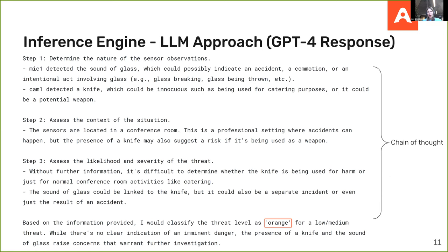This is an example of the chain of thought that GPT goes through, considering the different possible causes that could have led to those observations. In the end, it classifies it as orange, because a knife and a sound of glass could indicate some form of danger, but there are also possible innocent causes.